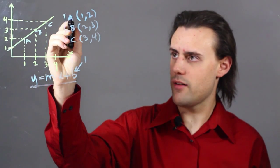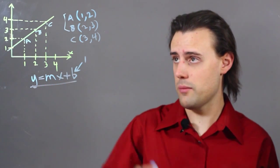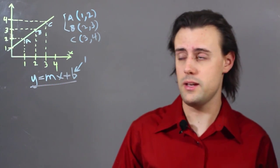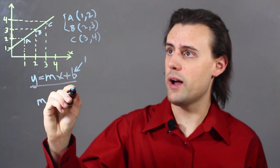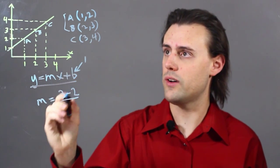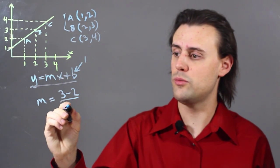So if we consider, for example, the set of points A and B, we have m is equal to the difference in the y values, 3 minus 2, divided by the difference in the x values, 2 minus 1.